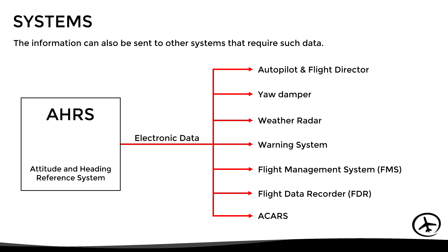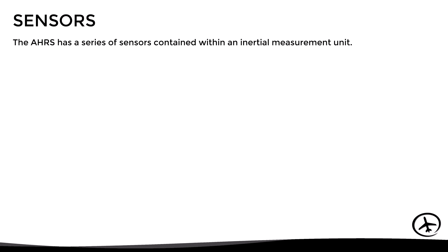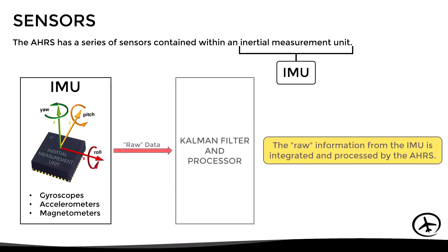Now that we have seen the instruments and systems that use the information generated by the AHRS, let us look at its sensors. The AHRS has a series of sensors contained within an Inertial Measurement Unit, abbreviated as IMU. This unit is responsible for measuring changes in the aircraft's attitude and heading, then sending this raw information to a Kalman filter and a processor to integrate and process it. After this, the electronic data is sent to the flight instruments and systems.